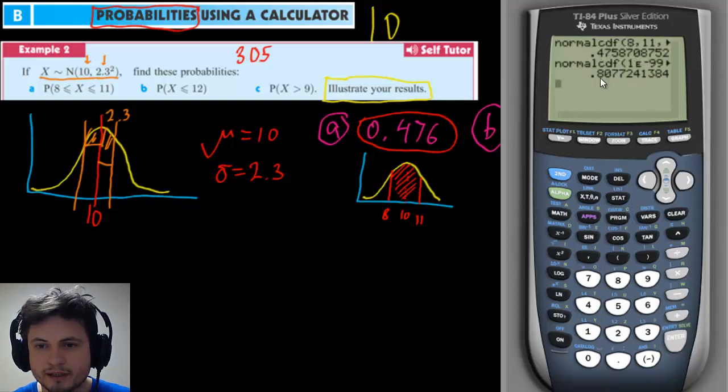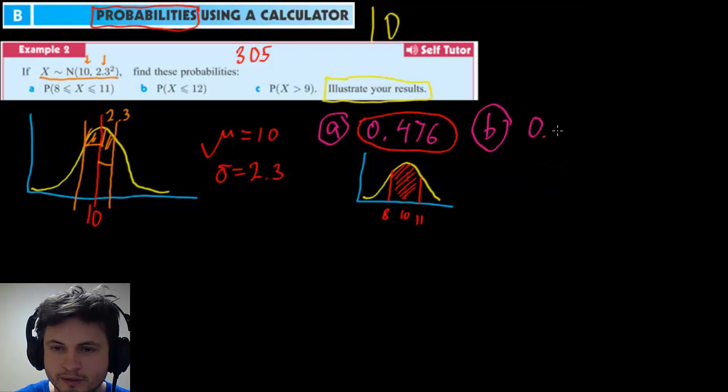and then the upper value here is 12 and the other values we don't change and the answer we get is 0.80772. So essentially 0.808, 0.808 and this is 80.8 percent. So let's draw this again.